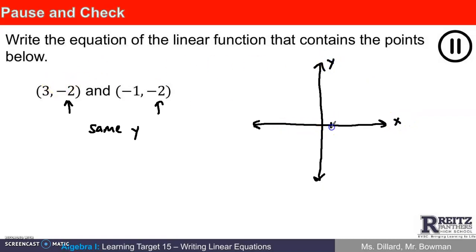So I want to make a sketch to see if I can figure out what the line equation ought to be. I need 3, negative 2. X is 3, y is negative 2. And I also need negative 1, negative 2. That would be back 1 and down 2. This is a horizontal line. And a horizontal line has an equation where we want to say that every y value should be negative 2. It's just y equals negative 2. That's the answer.